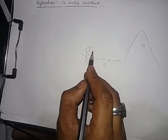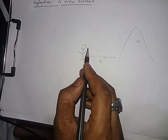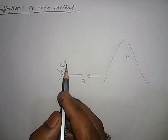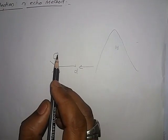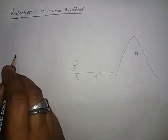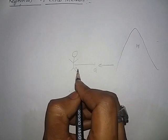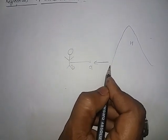Let observer fires a gunshot and after time t the echo of gunshot is noted. It means that in time t sound has covered the distance from o to hill and hill to o.